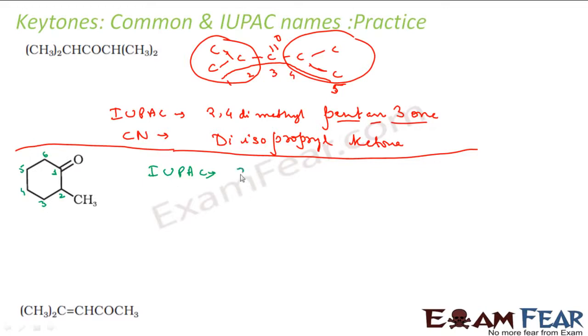At 2, I have a methyl group, so it will be 2-methyl. This is cyclohexane, and since it is ketone, I will put hexanone. For the common name, this is my carbonyl group. This is my alpha carbon - it is the carbon attached to the carbonyl. This is my beta carbon. Alpha and methyl group, so it is alpha-methylcyclohexanone.